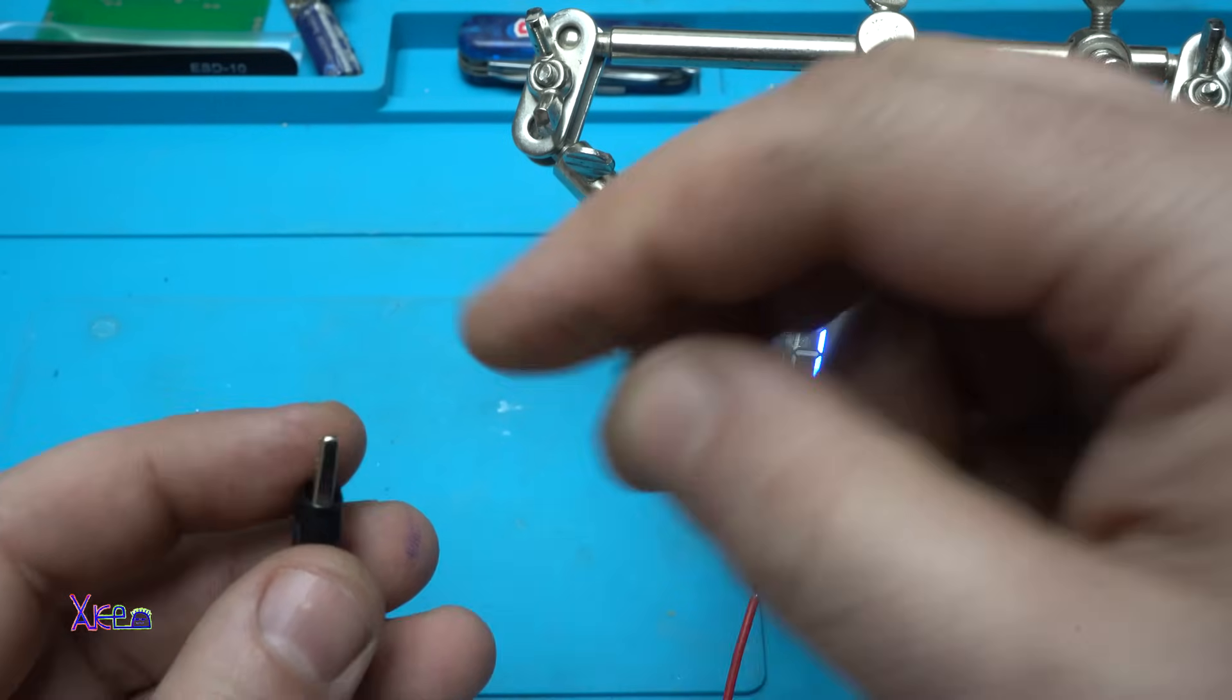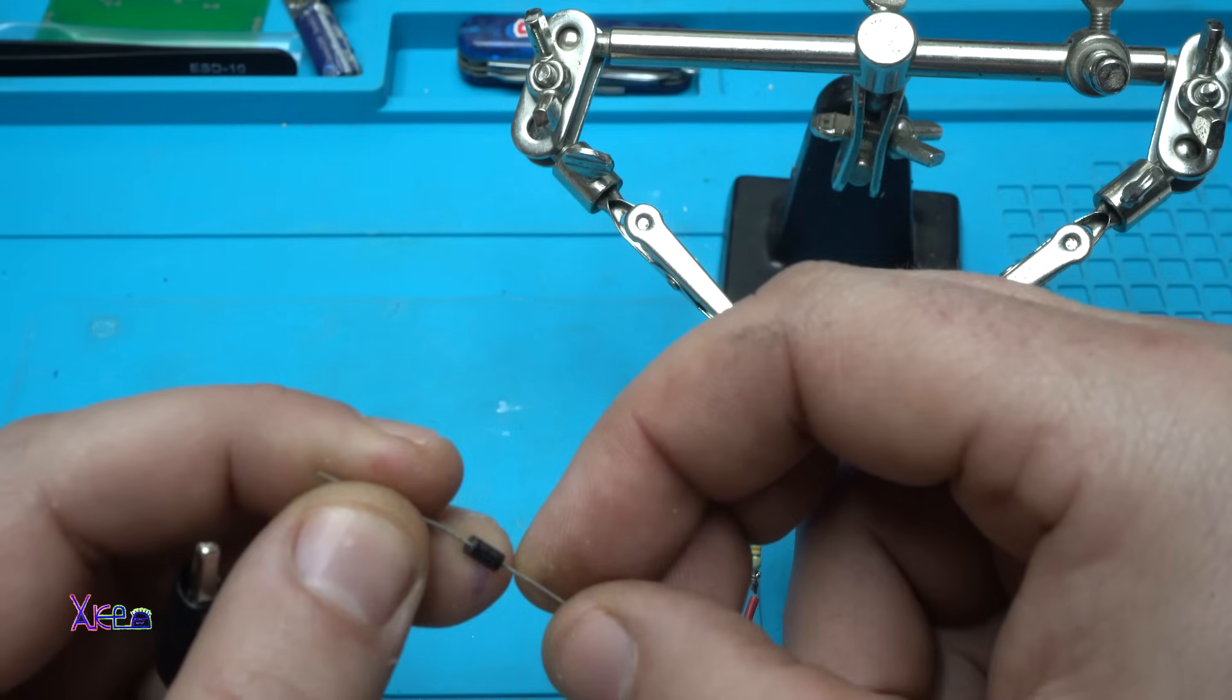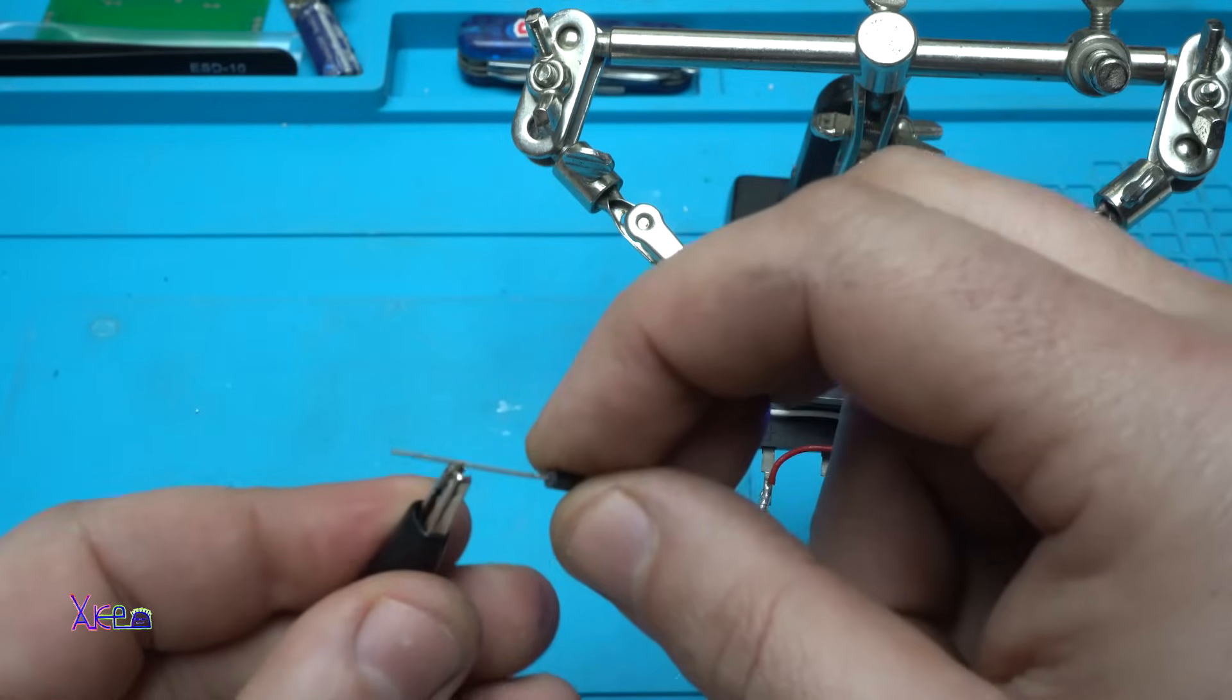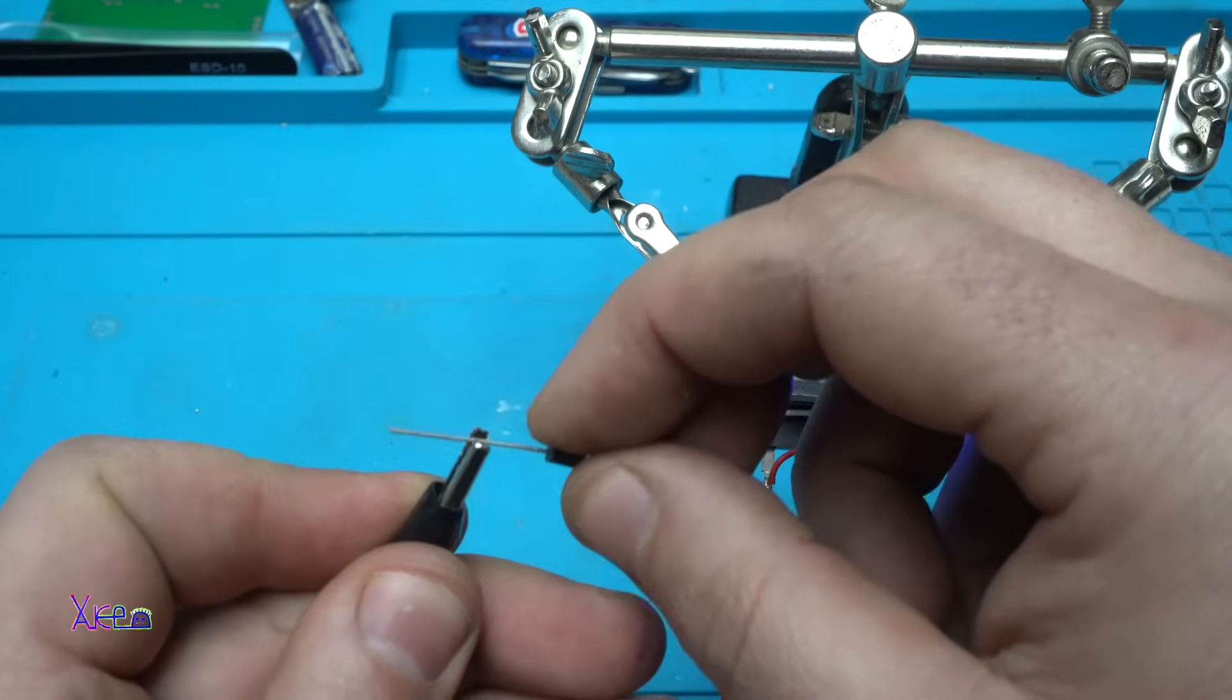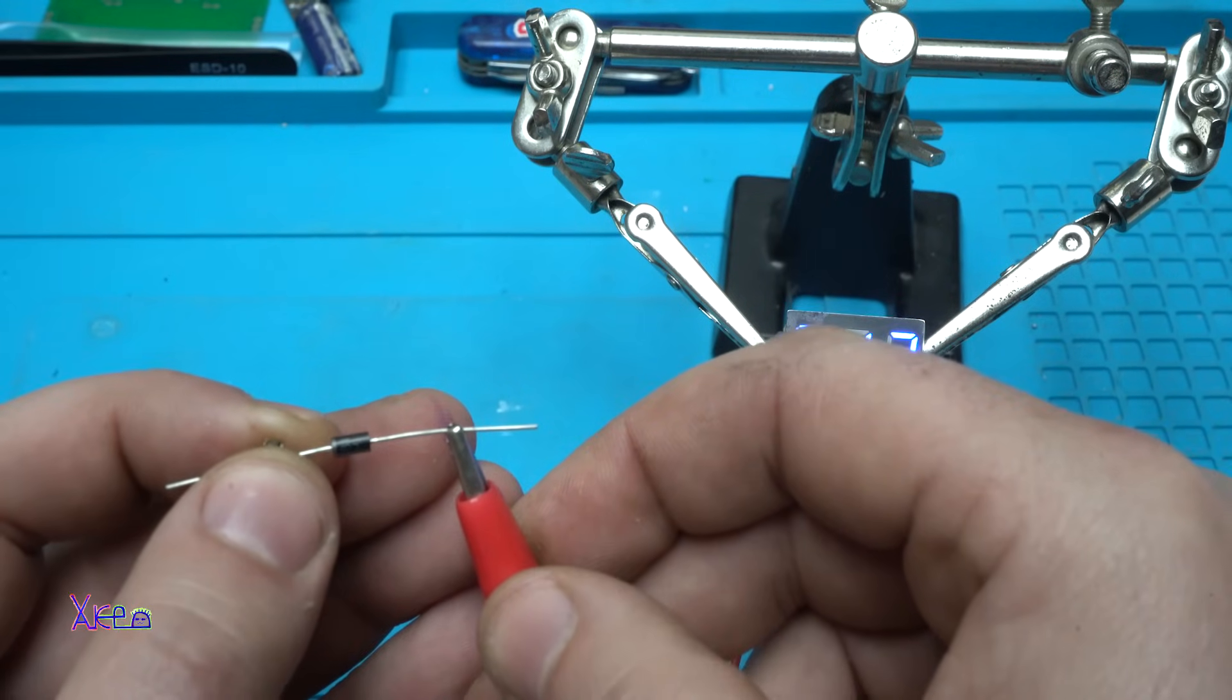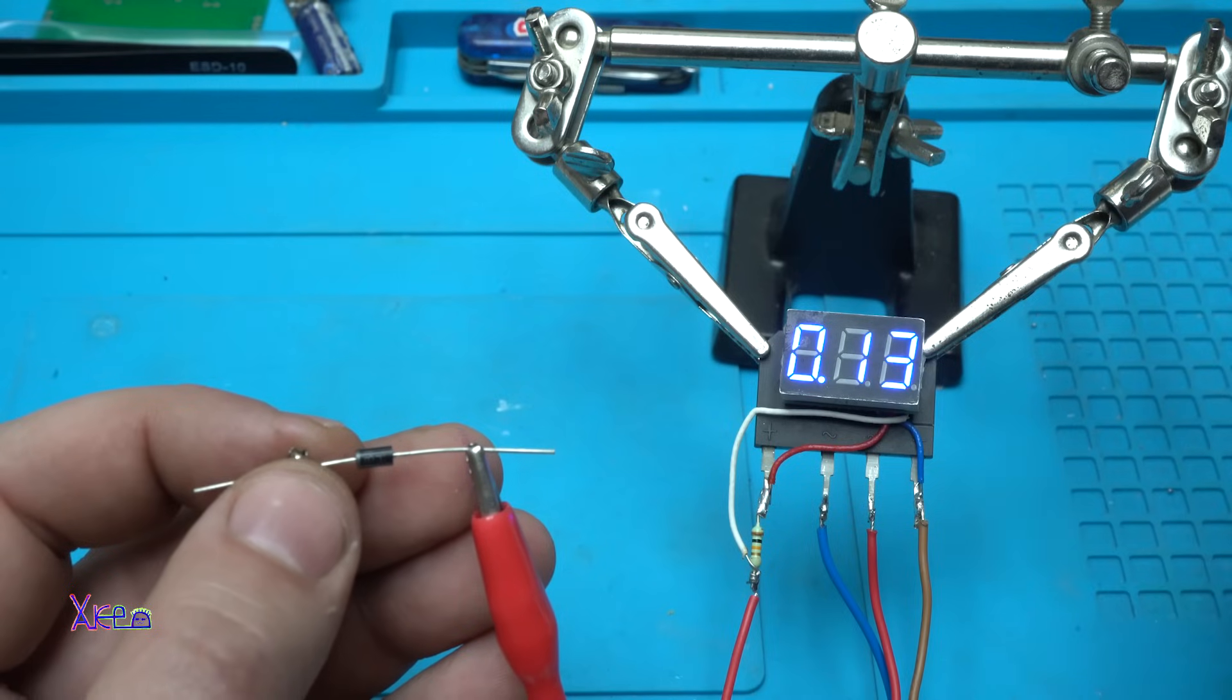And this is the Schottky diode. And I think it's 1N5819. It's a Schottky diode. This should be 0.12. 0.12, it's okay. The tool is working great. I love it.